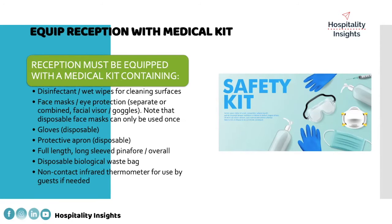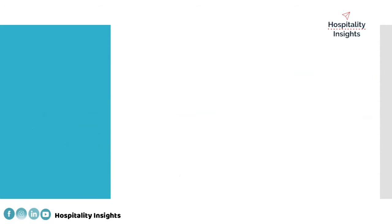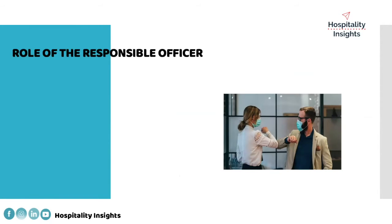Equip the reception with a medical kit. The first visible thing when the guest arrives is the reception, and customers would like to see all medical kits in place so they can feel they are in a safe place. The kit should include disinfectant wipes for cleaning surfaces, face masks, protective aprons, and full-length long-sleeved gowns. All this equipment should be visible at the desk — you don't want it stored somewhere in the back office where guests can't see it or access it.